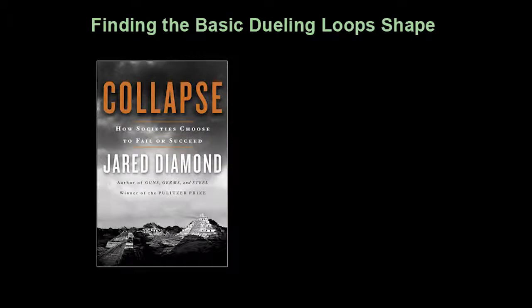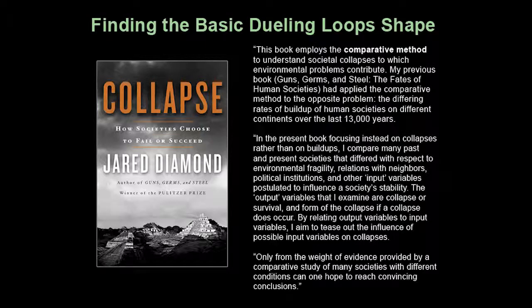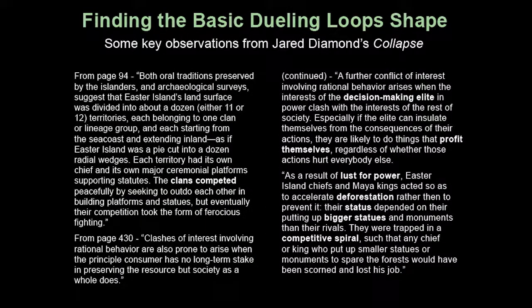Jared Diamond's Collapse was published in 2005. Here are a few quotes describing the book's goal of applying the comparative method to find the root cause of past collapses. Click on pause, and then after you've read it, resume. Here are some detailed key observations Diamond made about the causes of collapse. The key conclusions have been bolded — click on pause while you read it, and then continue.